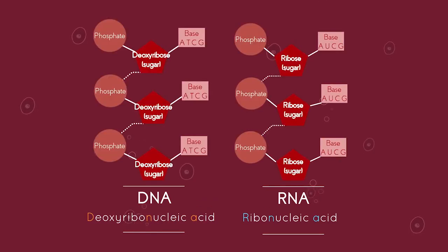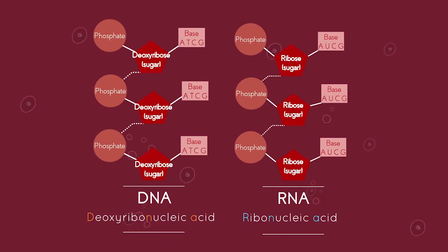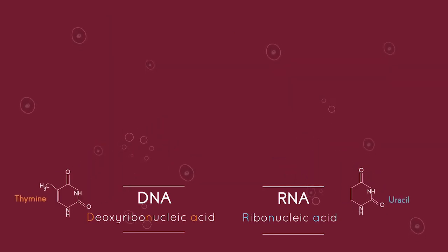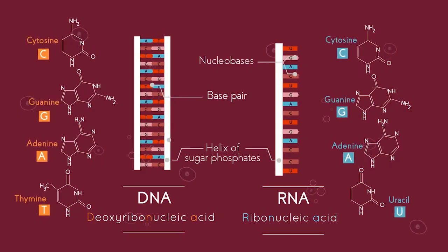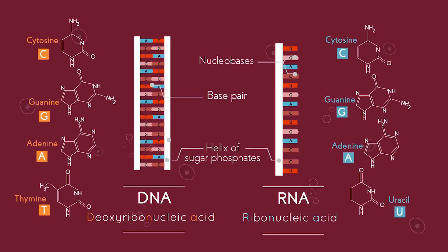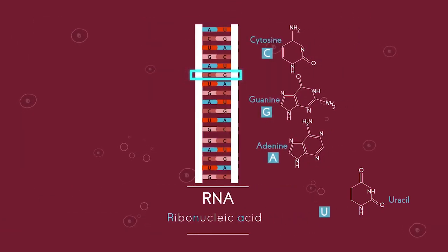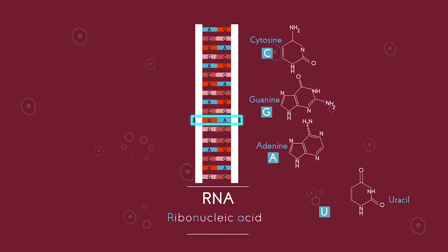DNA has a sugar called deoxyribose, whereas RNA has a sugar called ribose. DNA has the base thymine (T), while RNA has the base uracil (U). So in RNA, C and G still pair, but now A and U pair.